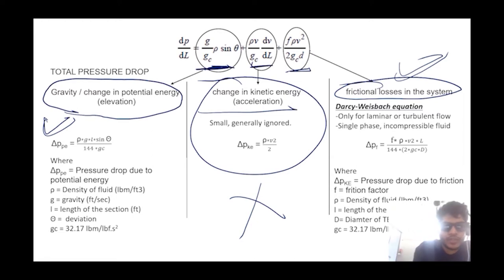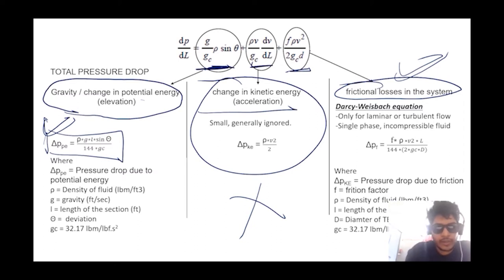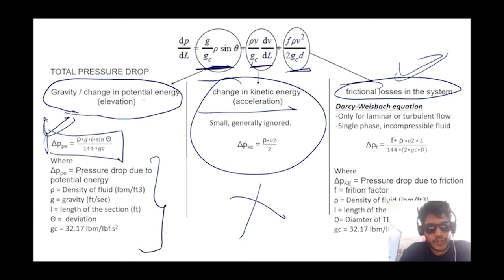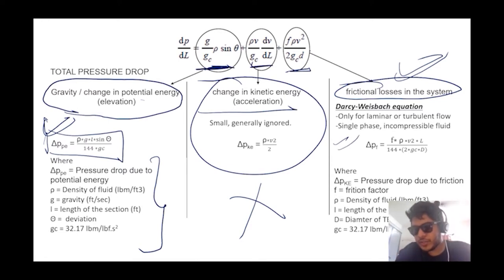The change in potential energy equation gives ΔP as the pressure drop due to potential energy, where ρ is the density of fluid in lb/ft³, gravity is in ft/s², length of section is in feet, θ is the deviation, and gc is the constant 32.17 lb·ft/(lbf·s²). For frictional loss, the Darcy-Weisbach equation is used, which is applicable only for laminar or turbulent flow.